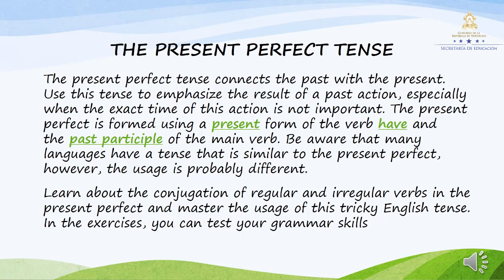El presente perfecto conecta el pasado con el presente. Use este tiempo verbal para enfatizar el resultado de una acción pasada, especialmente cuando la hora exacta de esta acción no es importante. El presente perfecto se forma usando una forma presente del verbo 'have' y el participio pasado del verbo principal. Ten en cuenta que muchos idiomas tienen un tiempo que es similar al presente perfecto. Sin embargo, el uso probablemente sea diferente. Aprender a conjugar los verbos regulares e irregulares en el presente perfecto y dominar el uso de este complicado tiempo en inglés.